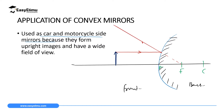Another ray we can use is a ray from the tip of the object appearing to pass through the center of curvature C; this ray will be reflected along its own path. An image will be formed, and this image is always upright and smaller than the object. However, we are going to see that as an advantage.